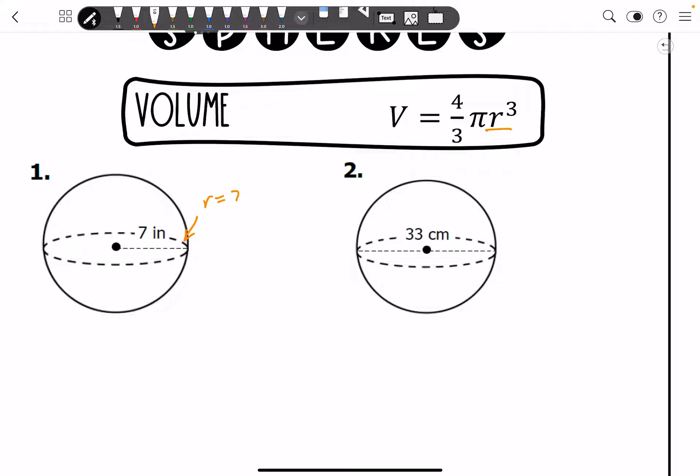And you can grab the radius from what you've been given. And for this case, our radius is 7. So we're going to go ahead and write our formula down first.